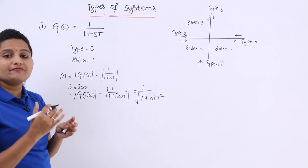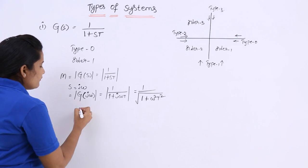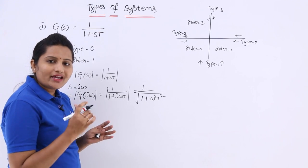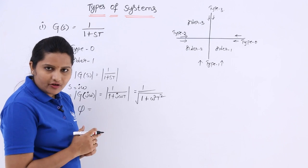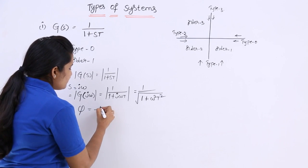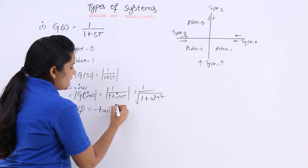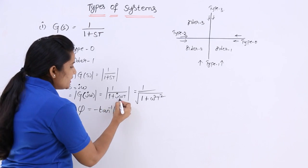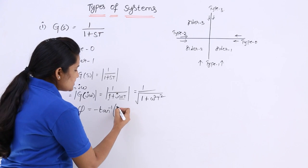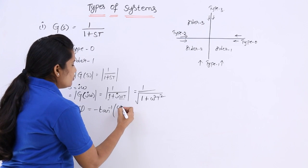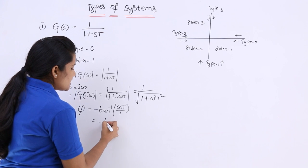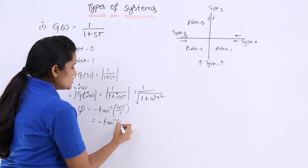Now we need the phase angle. Whenever a transfer function is given, the phase angle equation is −tan⁻¹(b/a). Here b = ωT and a = 1. So the phase angle is −tan⁻¹(ωT).